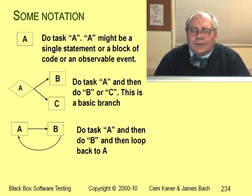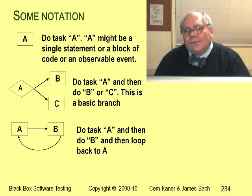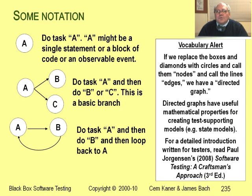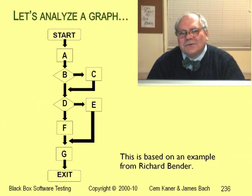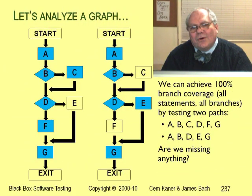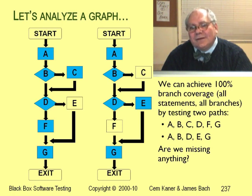In a flowchart, we show a branch with a diamond shape. Here, we branch from A to B or from A to C. Flow graphs are more fashionable today — to turn our diagrams into flow graphs, just replace all the diamonds and boxes with circles. Here's a nice little program. We can test all the statements and all the branches with two tests: one takes us from A to B to C to D to F to G, and the other takes us from A to B to D to E to G. So this is complete branch coverage.